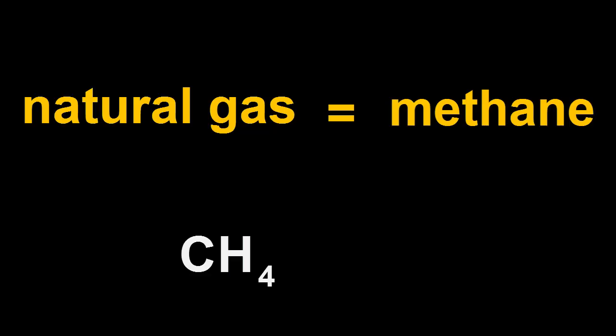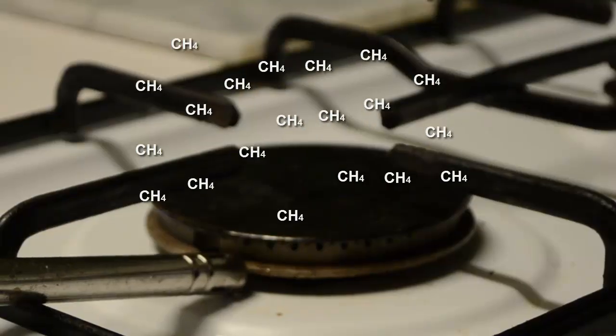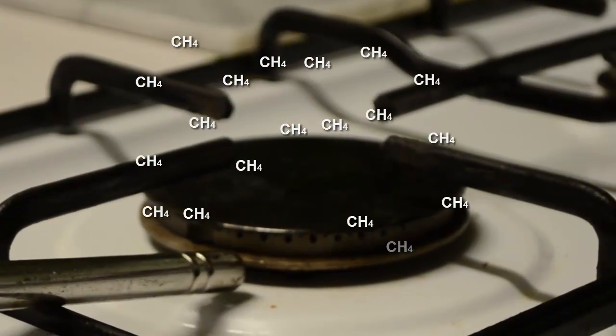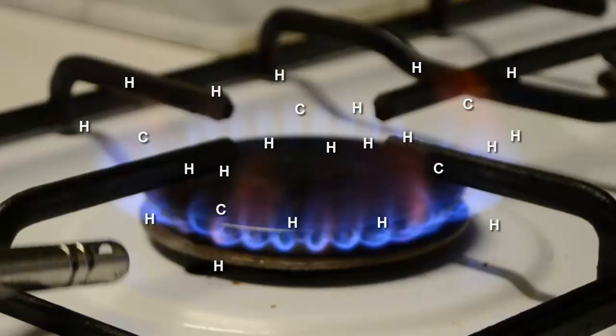The substance made of CH4 molecules is called methane, and it's sometimes called natural gas. Some vehicles use it as a fuel, and if you have a gas stove, it comes out of the burner. When you light the methane, it burns. The CH4 molecules break into smaller bits, and then they join with the oxygen in the air. This rebonding with oxygen releases a lot of heat, which then cooks your food.